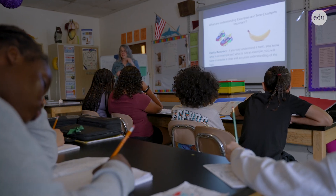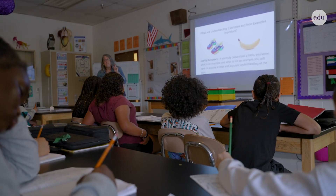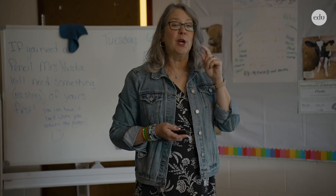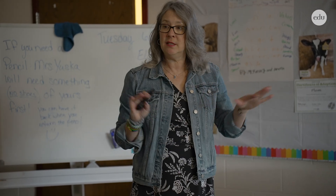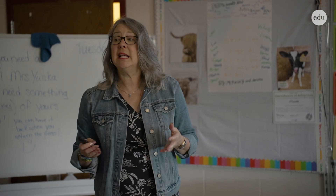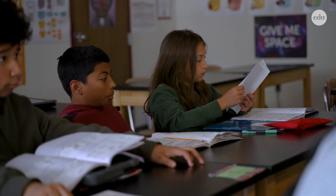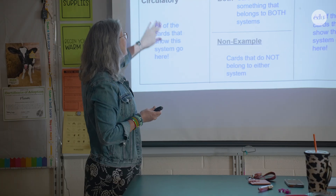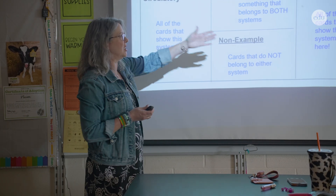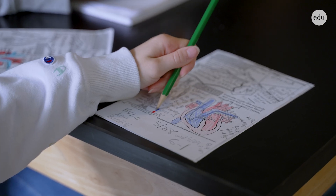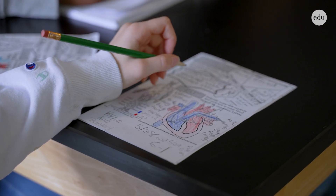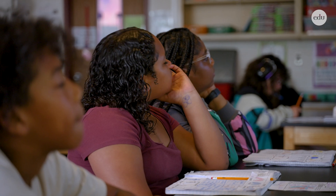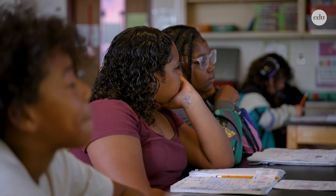We're in our last unit on body systems. We've just finished going through the six organ systems that we're learning, and now we're starting to really break down and understand how they work together. We're going to do a card sort. My goal in doing this activity was to have them think a little bit more deeply about what is in the system and what isn't in the system, because if they can separate those two, I know that they've already got a good foundation.